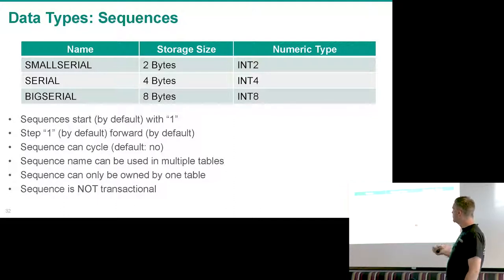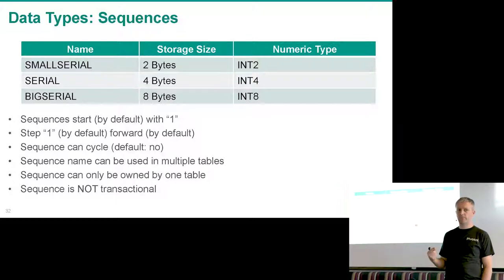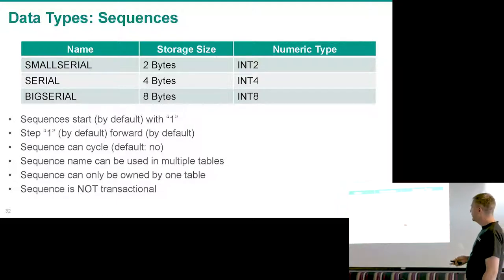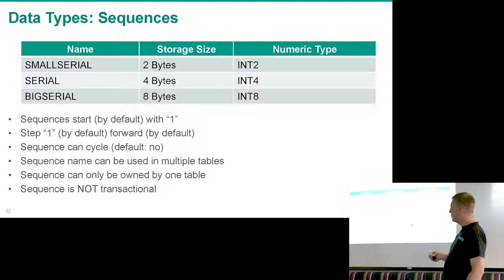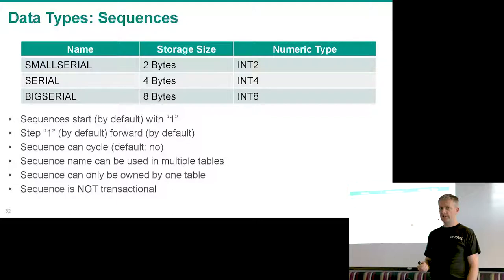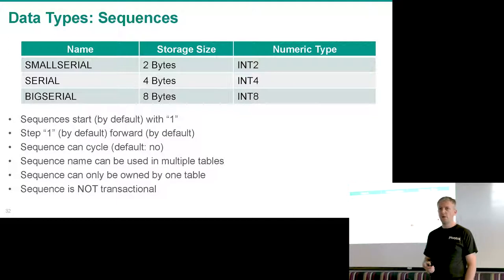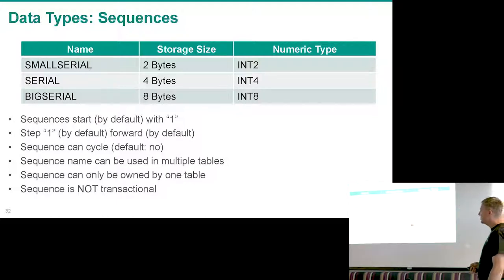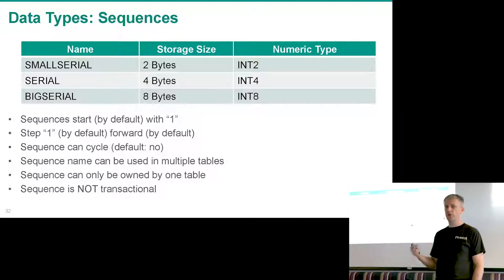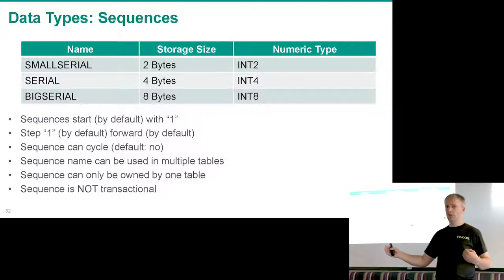This might be a problem if you use smallserial, which tops out at 32K. Once you reach 32K it will not cycle around and start again — it will just throw an error. A sequence is owned by a table, meaning if you drop the table Postgres also drops the sequence. You can use the same sequence in multiple tables as a default, making it a global auto-increment. Importantly, sequences are not transactional — any value fetched from a sequence is gone and is not returned if you roll back a transaction, so you can have gaps in your sequence numbers.